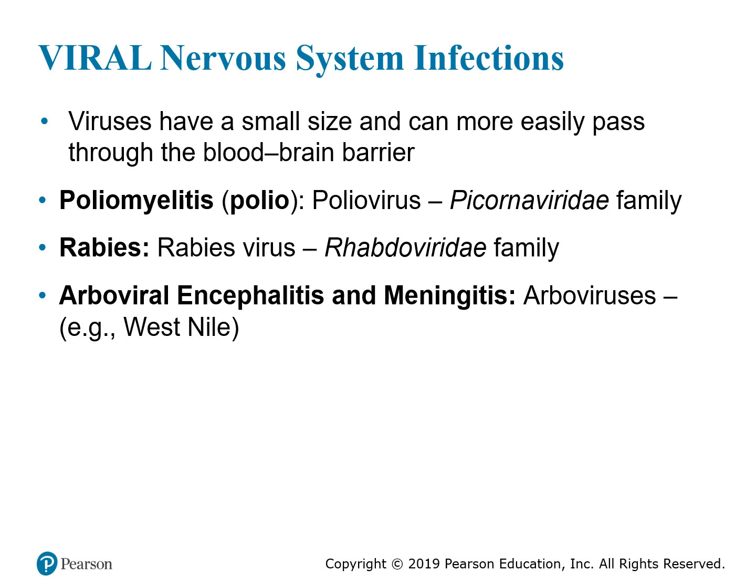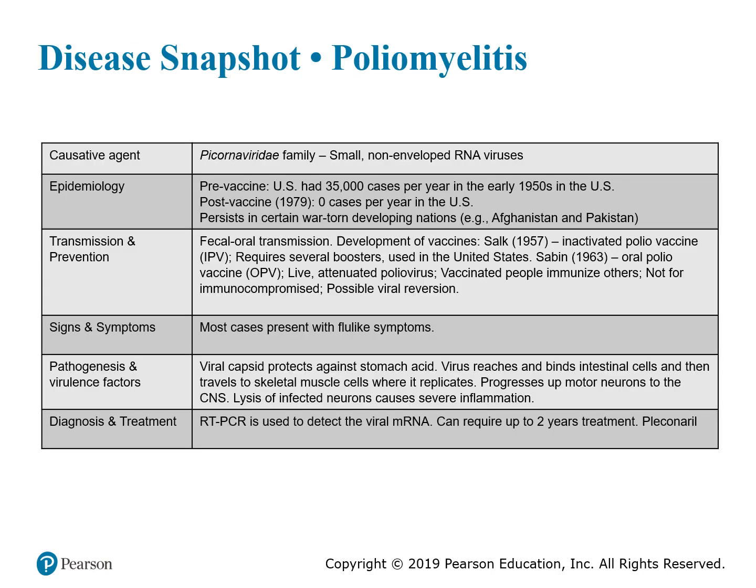Viruses are very small, which allows them to cross the blood-brain barrier. Some viruses we will look at include polio, rabies, and West Nile virus. Polio has been largely eradicated with vaccines, but it is still seen in other countries. Most patients present with flu-like symptoms. Polio can attack the central nervous system — the spine and brain — which can lead to muscle weakness and paralysis.